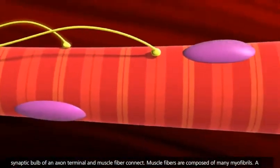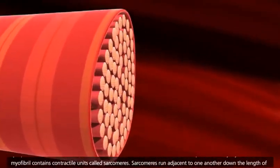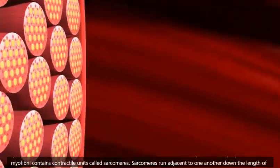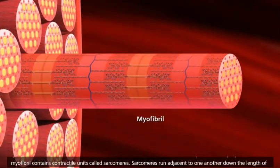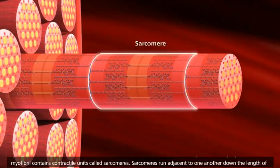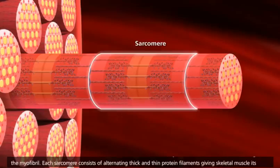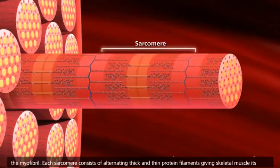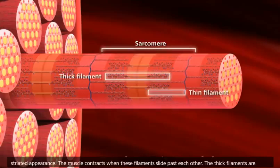Muscle fibers are composed of many myofibrils. A myofibril contains contractile units called sarcomeres. Sarcomeres run adjacent to one another down the length of the myofibril. Each sarcomere consists of alternating thick and thin protein filaments, giving skeletal muscle its striated appearance.